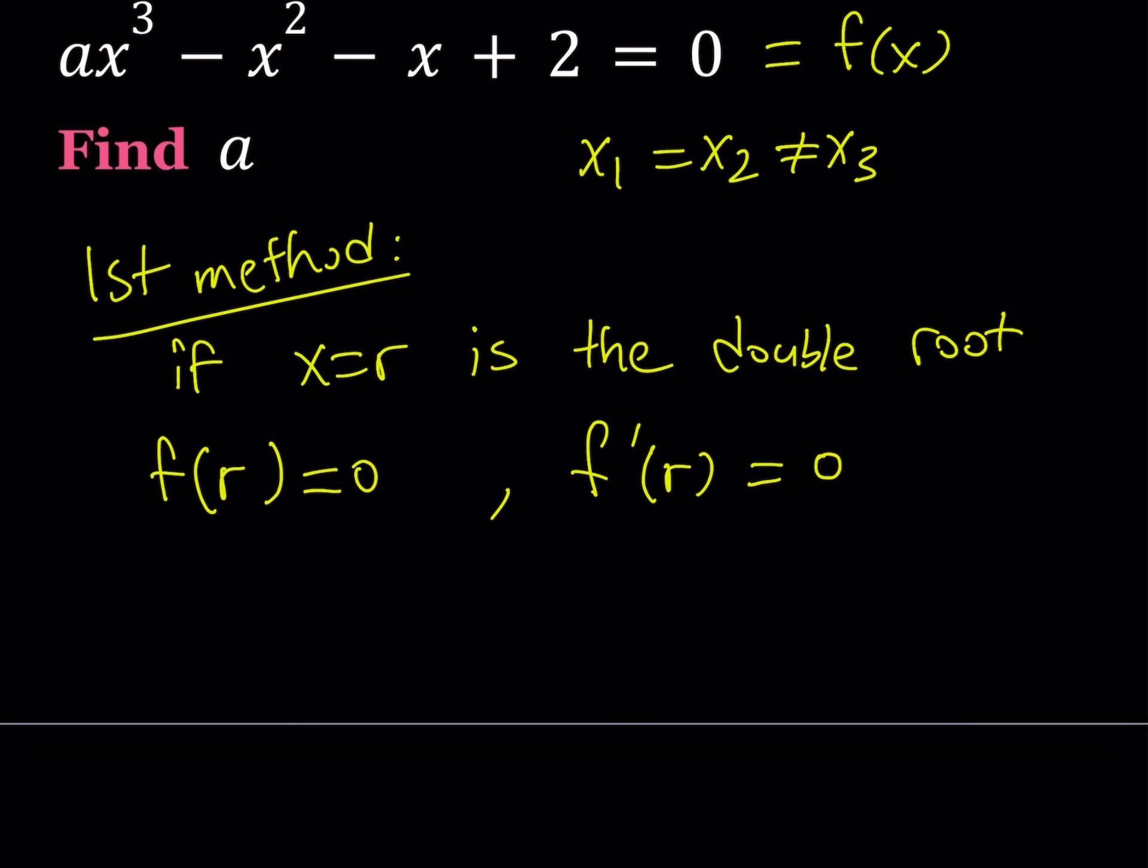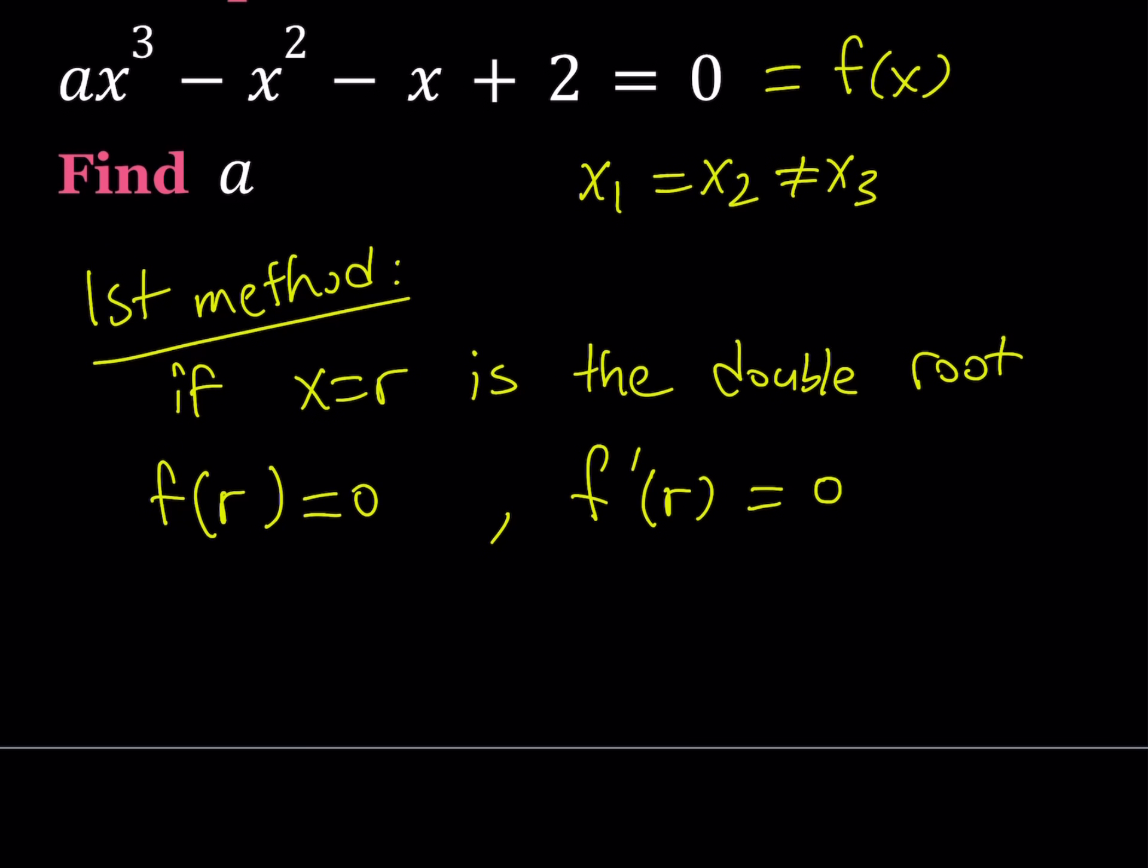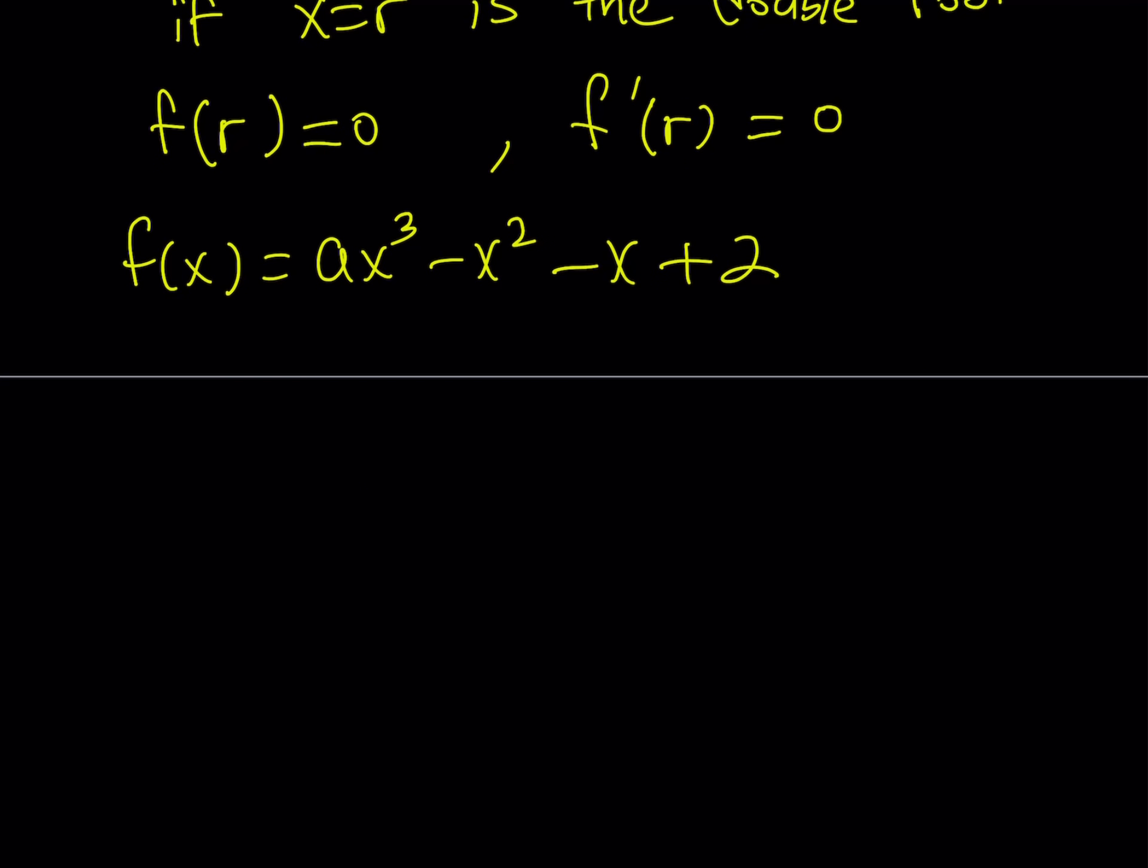Let's go ahead and take this expression f(x) = ax³ - x² - x + 2 and differentiate it. If you differentiate f you get f'(x) = 3ax² - 2x - 1. Now we're saying that r is going to be a root of both of these polynomials since it's a double root. So let's go ahead and replace r with both of these equations.